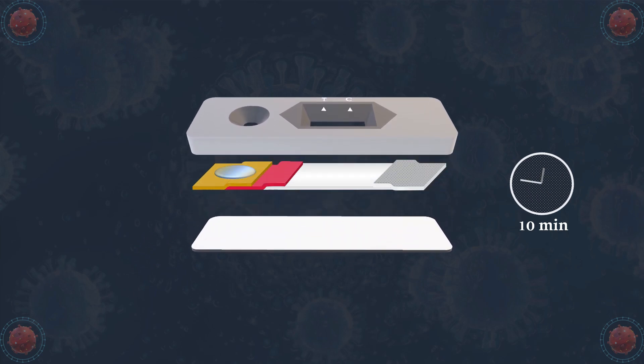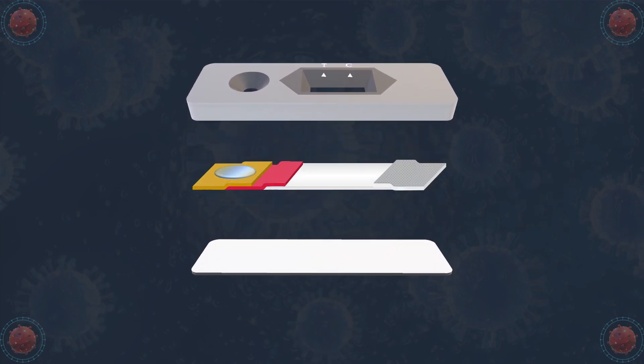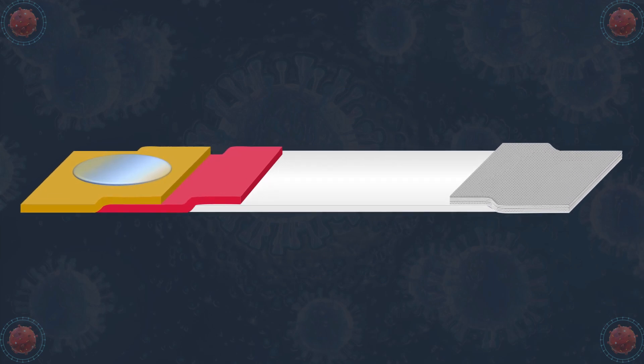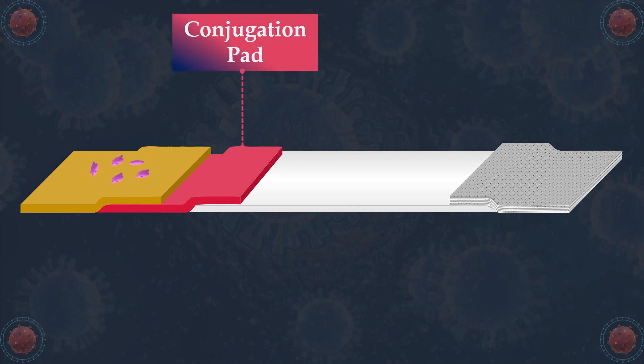The test kit is a qualitative lateral flow immunochromatographic assay. The test device contains a sample pad where the combined sample flows down, and a conjugation pad which contains a gold anti-SARS-CoV-2 antibody complex.